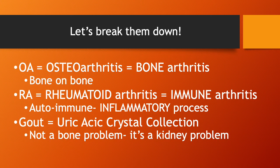First, we need to understand what each of them is. Osteoarthritis, or OA, is a bone problem — it's bone rubbing against bone. It's all about the bone, and that's important to understand because when we look at how this person is affected, where they hurt, diagnostic testing, and treatment, it all makes sense because it's about the bone.